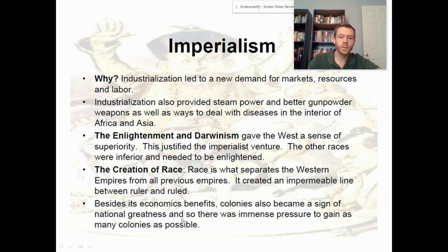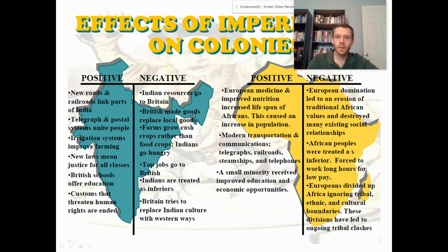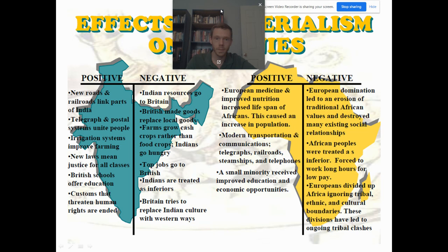This slide looks at the effects of imperialism on the colonies with a simple T-chart — positive and negative — examining what was happening in India under the British Empire and in Africa. I'll leave that slide up for a moment for you to read.